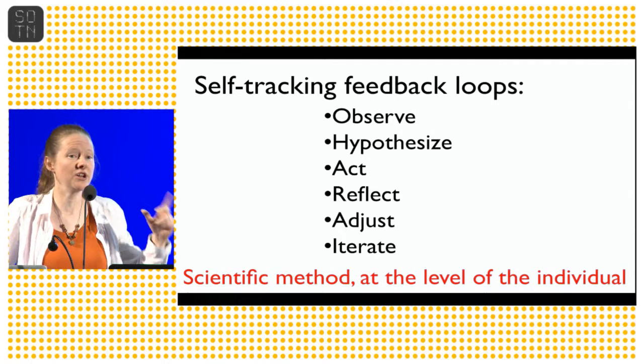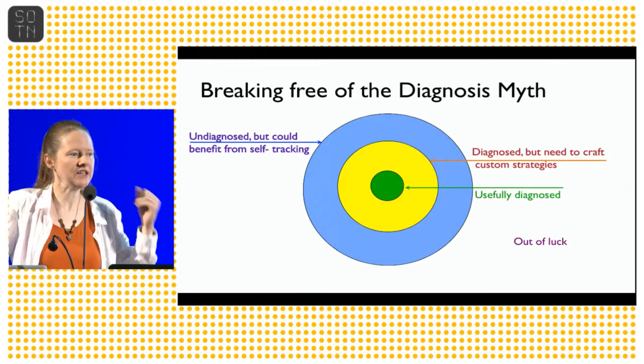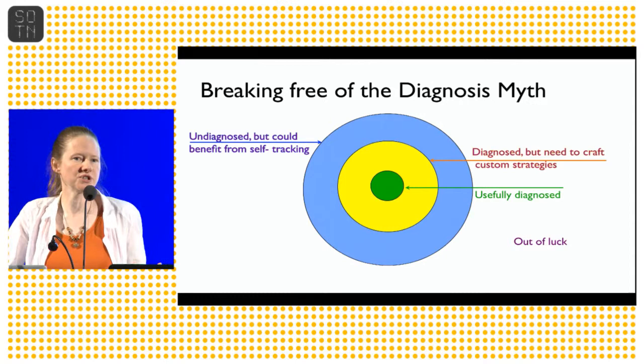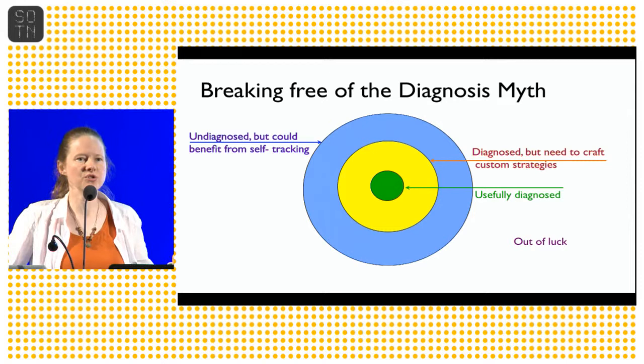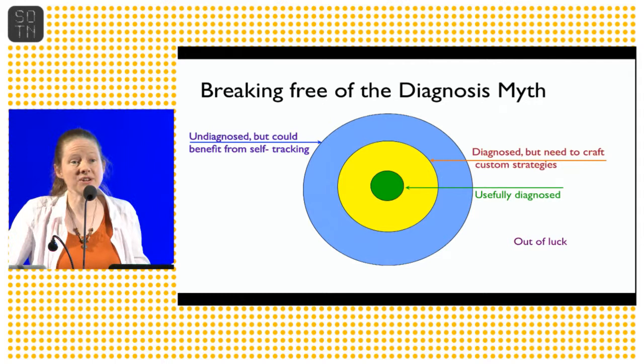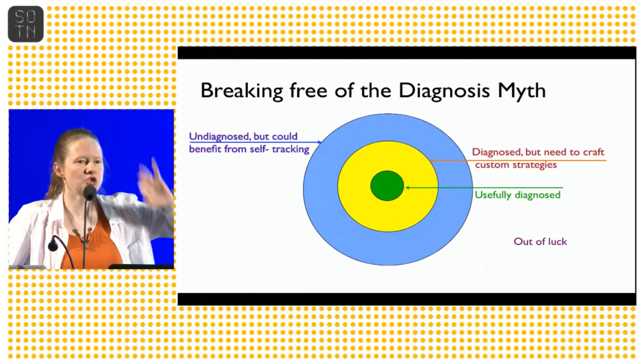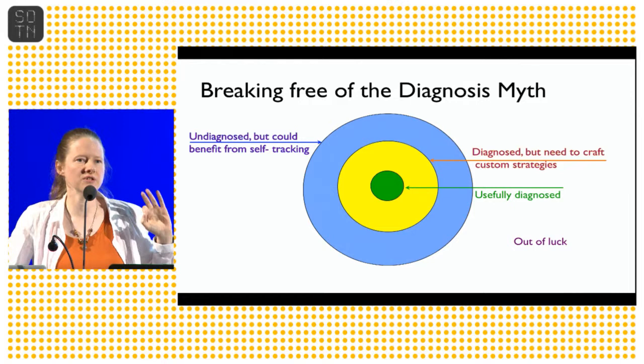Looking at it through the lens of the potential for self-tracking, it gets you free of the diagnosis myth. It gets you free of the tyranny of the norm. Because it turns out that even if you have a diagnosis, it may or may not be what you need. If you've got things that are getting triggered, what is triggering them? They can't help you with that. They can just mask the symptoms. Even if you're undiagnosed, who cares? This is a different set of dimensions. It's a different approach. You're controlling which side of the line you're on.